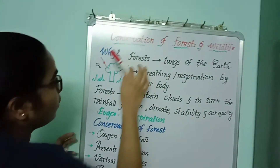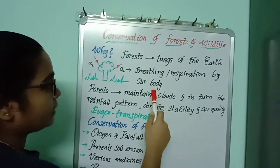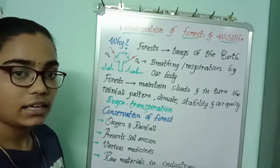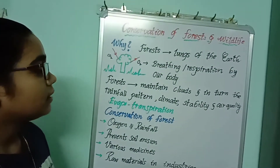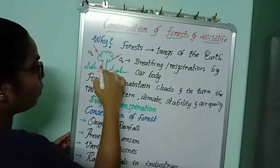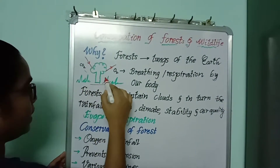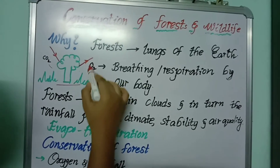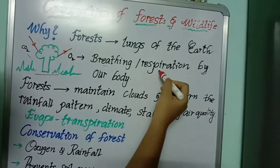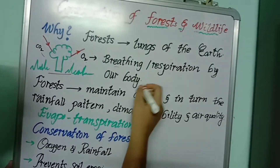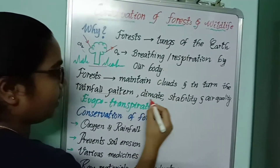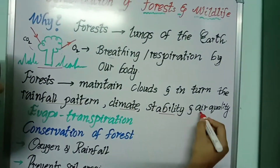If we look into forests, forests are lungs of the earth. Trees absorb carbon dioxide from the atmosphere and release oxygen into the atmosphere. This oxygen can be used for breathing and respiration by our body. And forests maintain clouds and in turn the rainfall pattern, climate, stability and air quality.